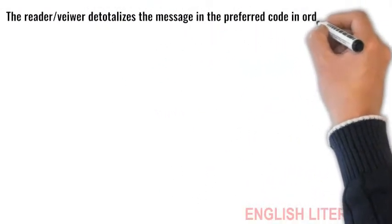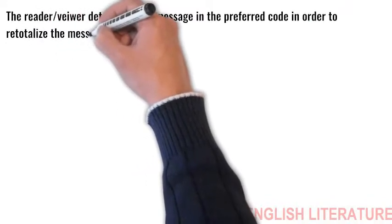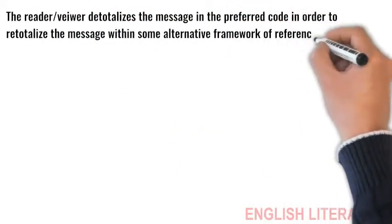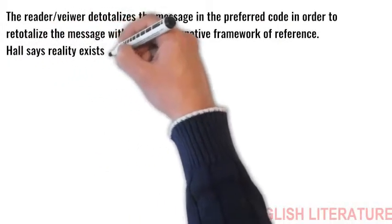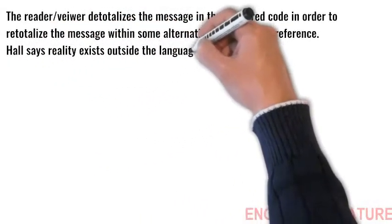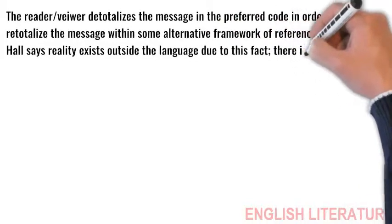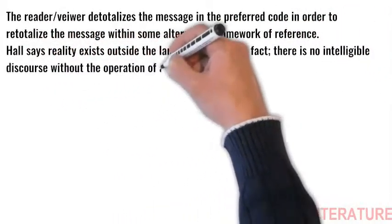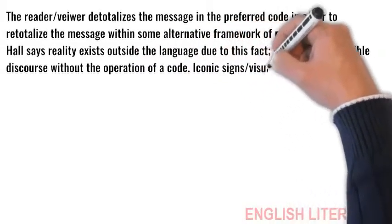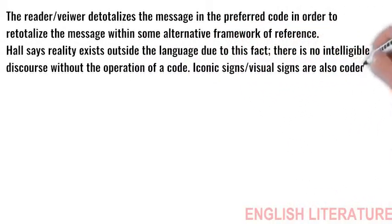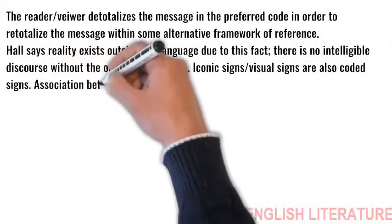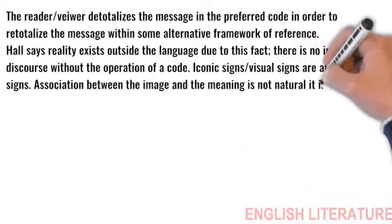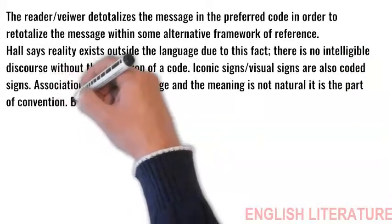He or she is operating with what we must call an oppositional code. The reader or viewer detotalizes the message in the preferred code in order to retotalize the message within some alternative framework of reference. Hall says, Reality exists outside the language due to this fact. There is no intelligible discourse without the operation of a code. Iconic signs or visual signs are also coded signs. Association between the image and the meaning is not natural. It is the part of convention.